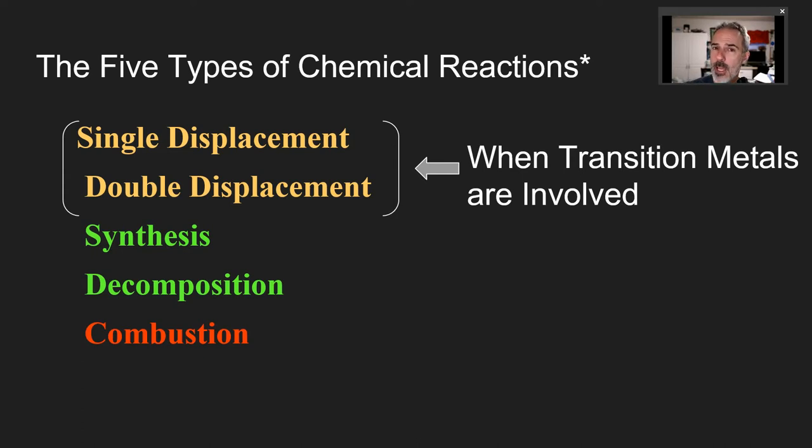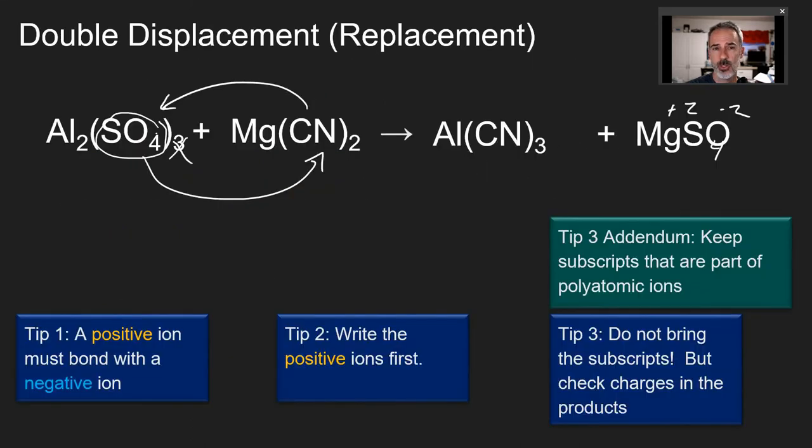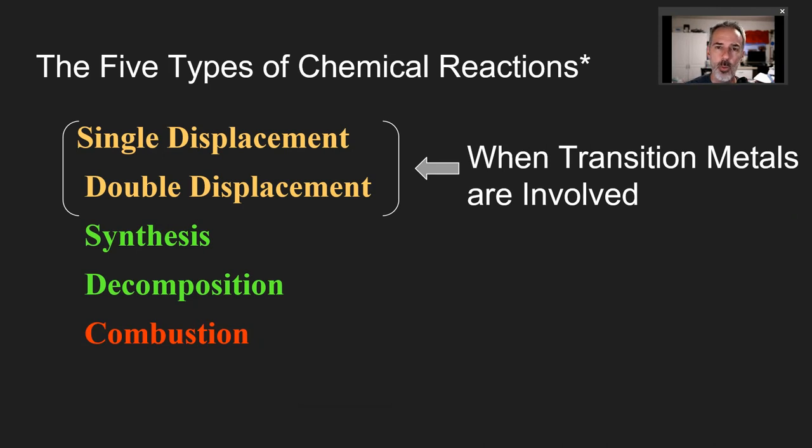That's how we tackle polyatomic ions. If the subscript is part of the ion, we definitely need to keep it in there. But other than that, it's the exact same process as always. We're probably going to stop here. My next assignment will have you practice this quite a bit. But we do have one more step to double displacements before we move on, which is what do you do if there are transition metals involved? Have you noticed all the ones we've been doing have aluminum and magnesium? There's been no iron or nickel. We're going to see that in the next lesson.